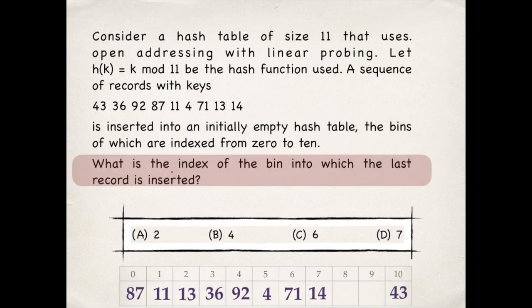We were supposed to find the index of the bin into which the last record is inserted. That key is 14, and 14 is inserted at location 7, so the answer is option D.